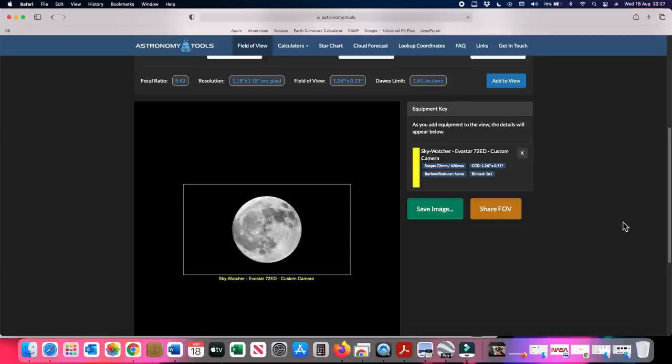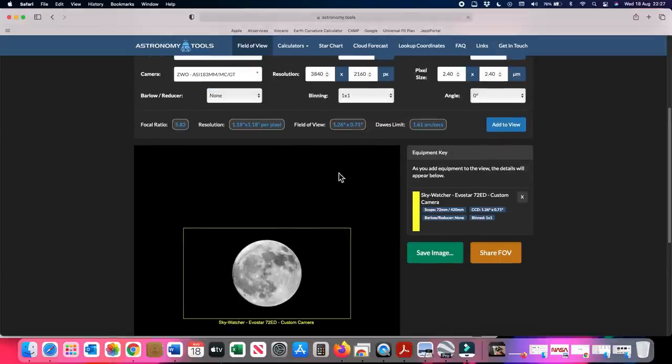So if you're planning to buy a telescope I strongly recommend using this site first to ensure your combination will give you the type of images you're looking for. Let me show you what happens if the telescope is too powerful.